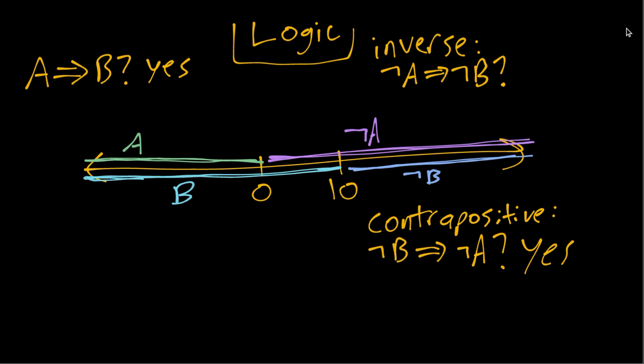But we can find points where A is false where B is true. For example, if x equals 5 is a counterexample, because there A is false but B is still true. This shows that the inverse does not hold. We can find a counterexample where A is false and yet B is true. In this particular example, we can find a counterexample where x is greater than 0 but less than 10.